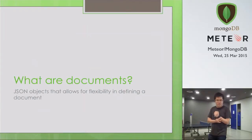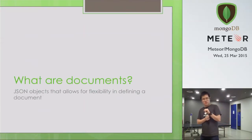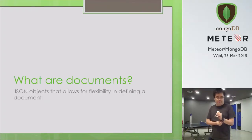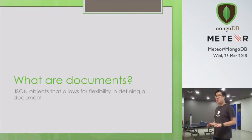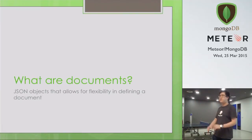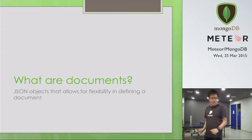What are documents? Documents were made popular by MongoDB. They are basically JSON objects — MongoDB calls it binary JSON (BSON). They allow you a lot of flexibility in defining what your data looks like. It's pretty much a standard JSON object: you can put in a new key, put in an array anywhere, put in a new object. It's really very flexible.